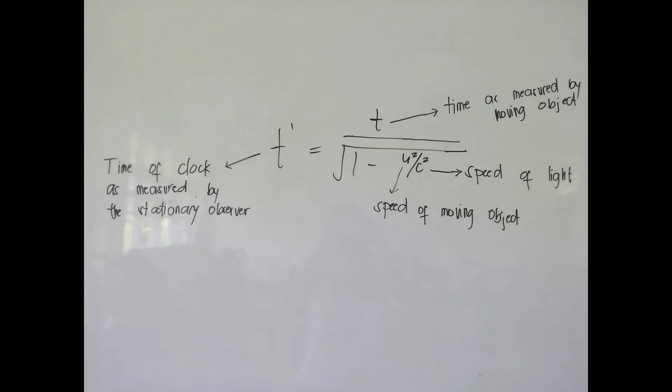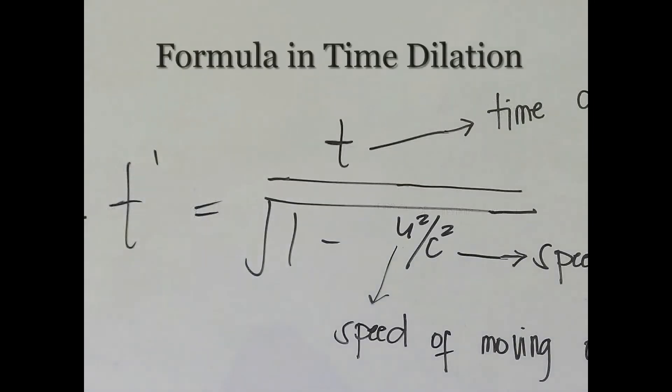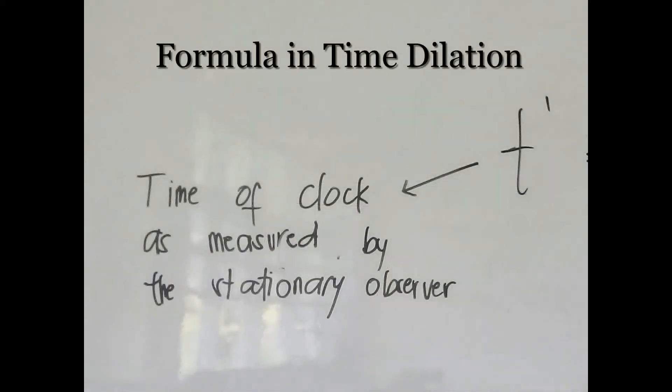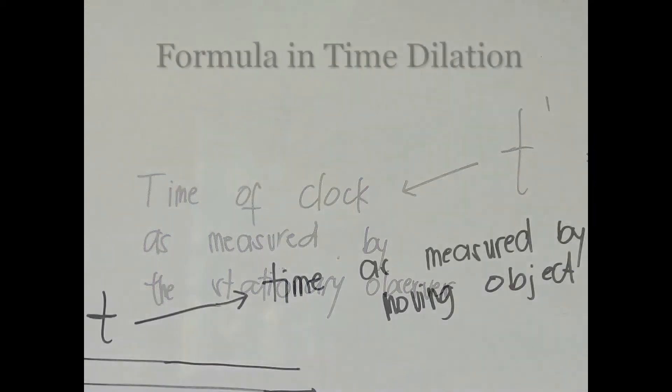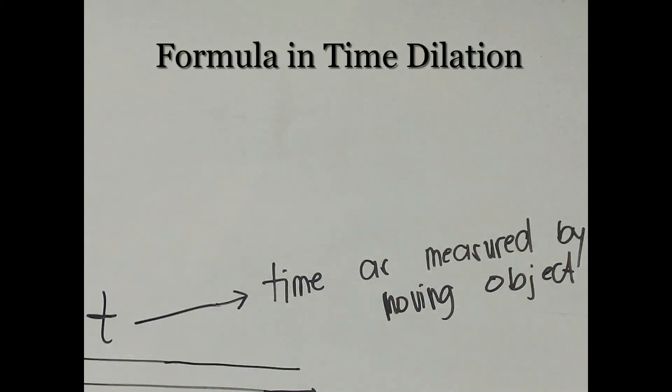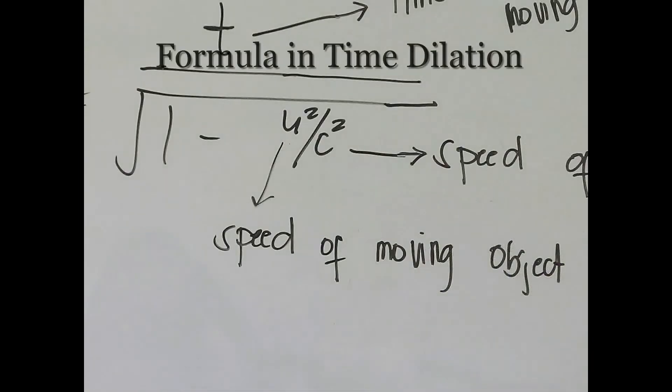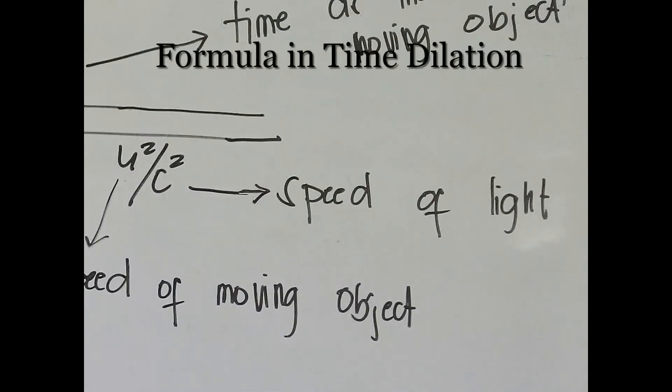So to calculate the time dilation of the two observers relative to each other, we use the formula. T prime is equal to T over the square root of 1 minus U squared divided by C squared. T prime here is the time of the clock as measured by the stationary observer, and T is the time as measured by the moving object. U is the speed of moving object, and C is the speed of light.